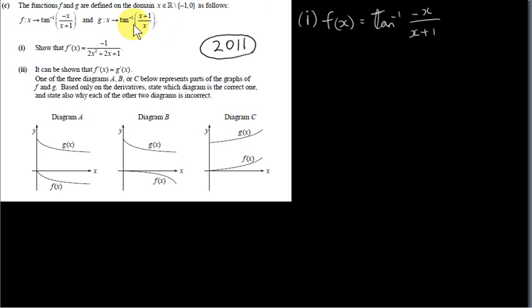x can't be 0 either, because in the second function g, if x were 0, we would have 0 in the denominator. So x can be any real number except minus 1 or 0 for both functions.